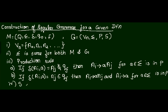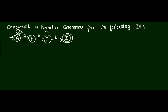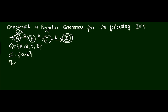I am going to explain this with an example. Construct a regular grammar for the following DFA. In this DFA there are five tuples. Q, the set of states, has four states: A, B, C, and D. Sigma equals two input symbols: a and b. The initial state is A, and the final state is D.